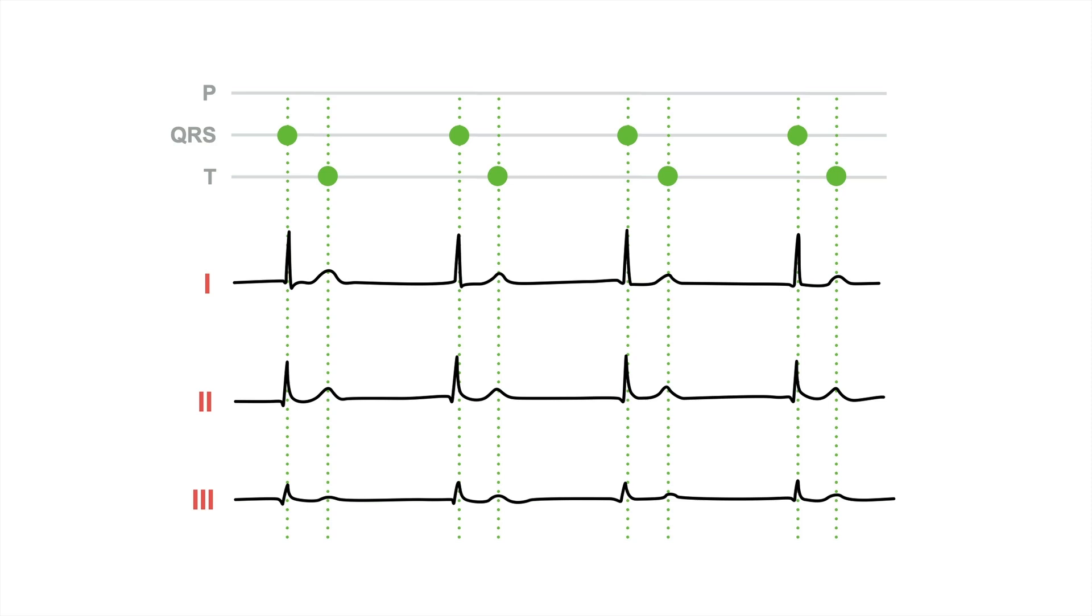But where are the P waves? Well, to be honest, there are none on this tracing. But you might believe me that they're actually hidden within the QRS complex.